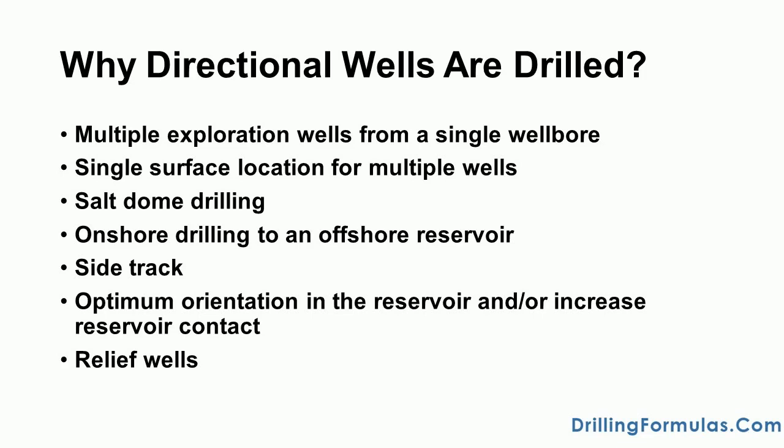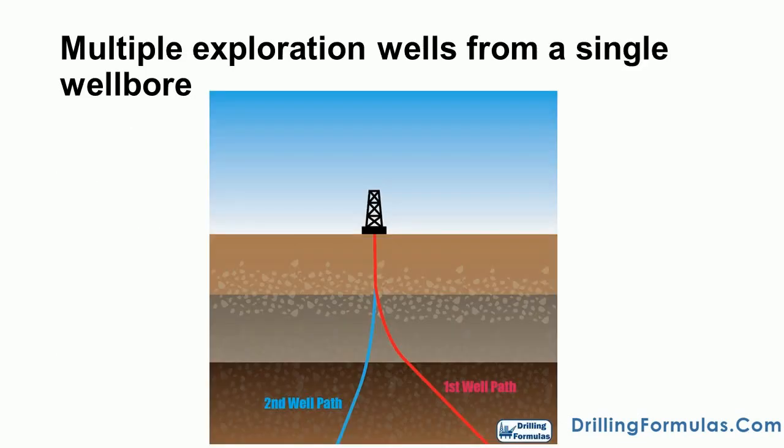Multiple exploration wells from a single wellbore. It is possible to drill a well to evaluate it, and then cement it back up. This well may then be deviated from its original path to an additional target. This may be done in order to evaluate multiple compartments in a single reservoir, if it is naturally split into several sections, or to extend the knowledge of the structure using a single well.